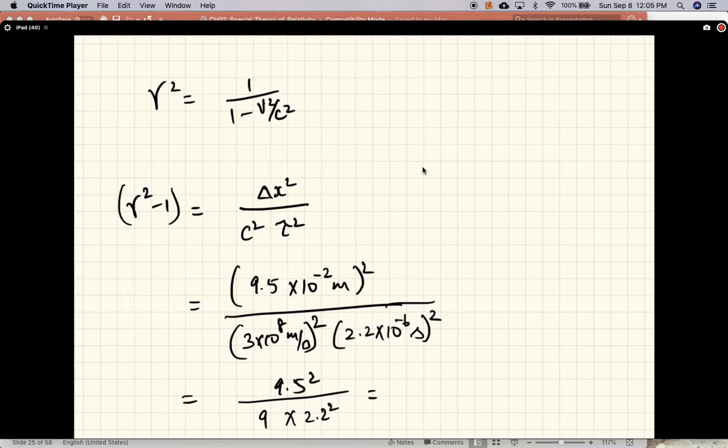And this factor works out to 2.07. So gamma squared is 3.07.